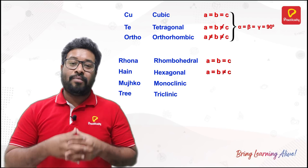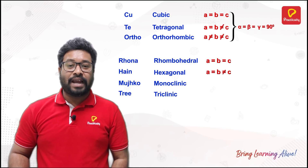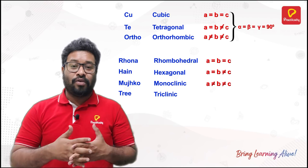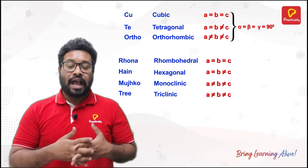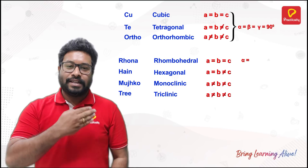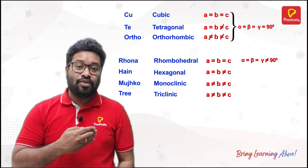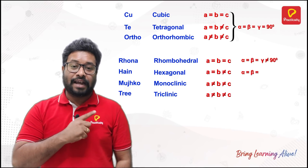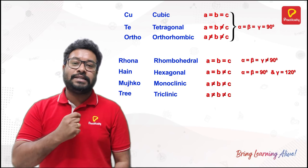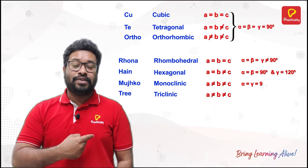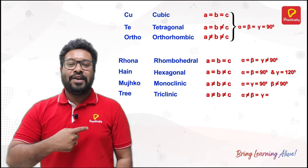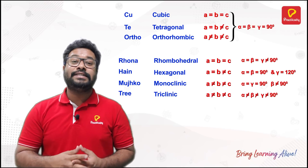Similarly for triclinic, the sides are exactly the same as monoclinic: A not equal to B not equal to C. Now for their interfacial angles: rhombohedral has alpha equal to beta equal to gamma, not equal to 90. For hexagonal, alpha and beta are 90, but gamma is 120. Going from hexagonal to monoclinic, replace beta with gamma — so alpha equal to gamma equal to 90, but beta not equal to 90. And for triclinic, alpha not equal to beta, not equal to gamma, not equal to 90, as it is completely unsymmetric.